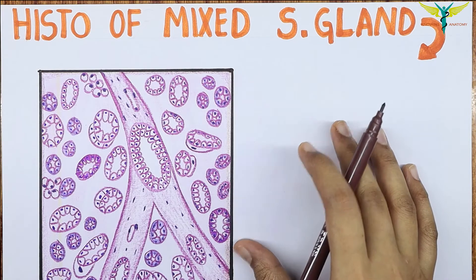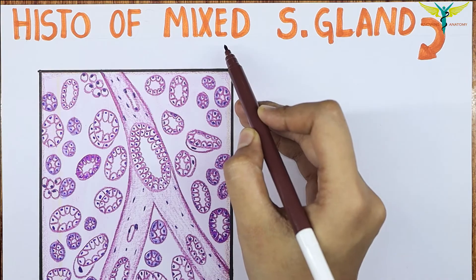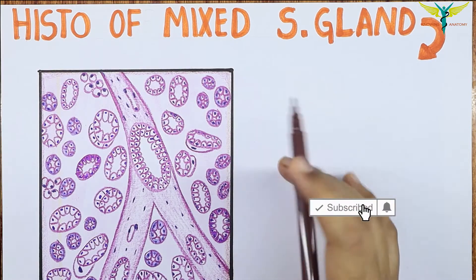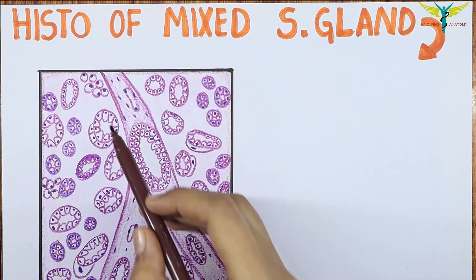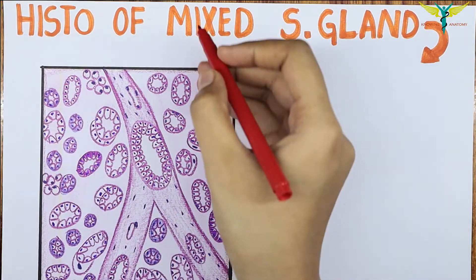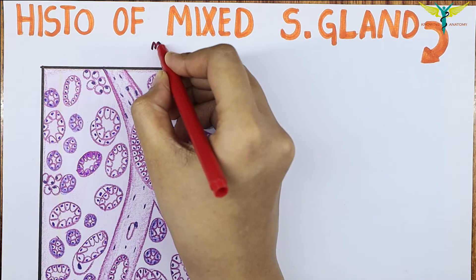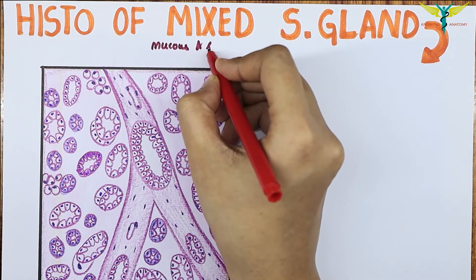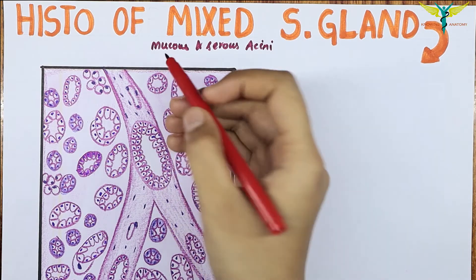In this video, let's learn about the histology of the mixed type of salivary gland. In a mixed type of salivary gland, you can notice the presence of the mucus acini and the serous acini. So the mixed type of salivary gland means it contains both the mucus and the serous acini.